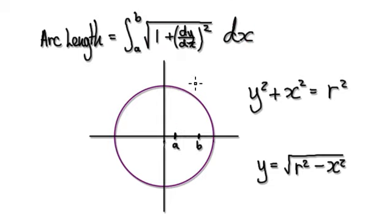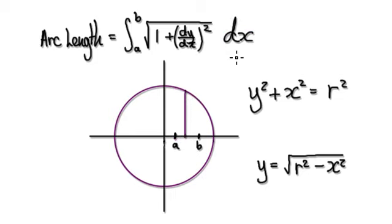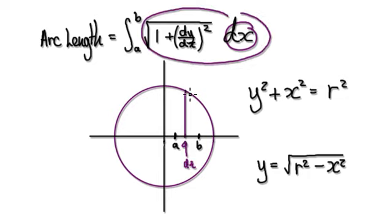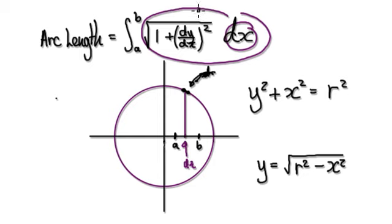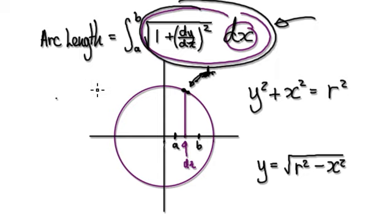So if you want to work out the surface area of the sphere, you're in effect summing up in the x direction. Let's look at one strip — the thickness here is dx. Once you've got your arc length, you 2πr it — you basically revolve this around. So once you've got your arc length, you times it by 2πy, where the height here is y.